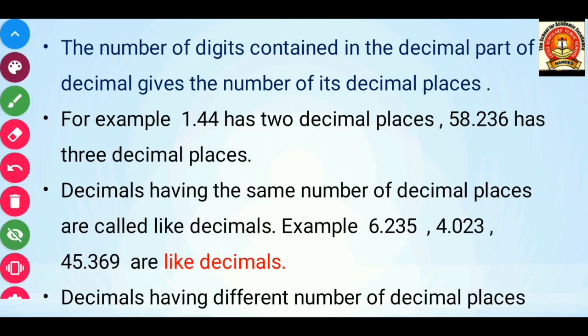The number of digits contained in the decimal part of a decimal gives the number of its decimal places. For example, in 1.44 we are having 2 decimal places after the decimal — 1 is the whole number part and 44 is the decimal part with 2 decimal places. In the example 58.236, we are having 3 decimal places after the decimal.